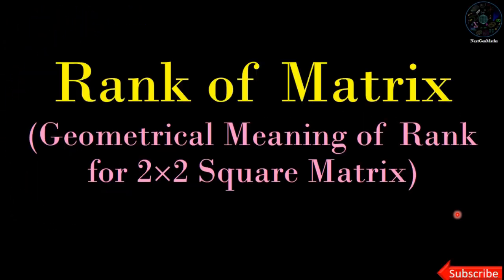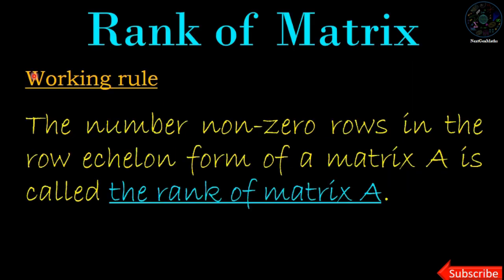Welcome friends. In this video we are going to understand the geometrical meaning of rank of a square matrix. Working rule for finding rank of a matrix: the number of non-zero rows in the row echelon form of a matrix A is called the rank of that matrix.